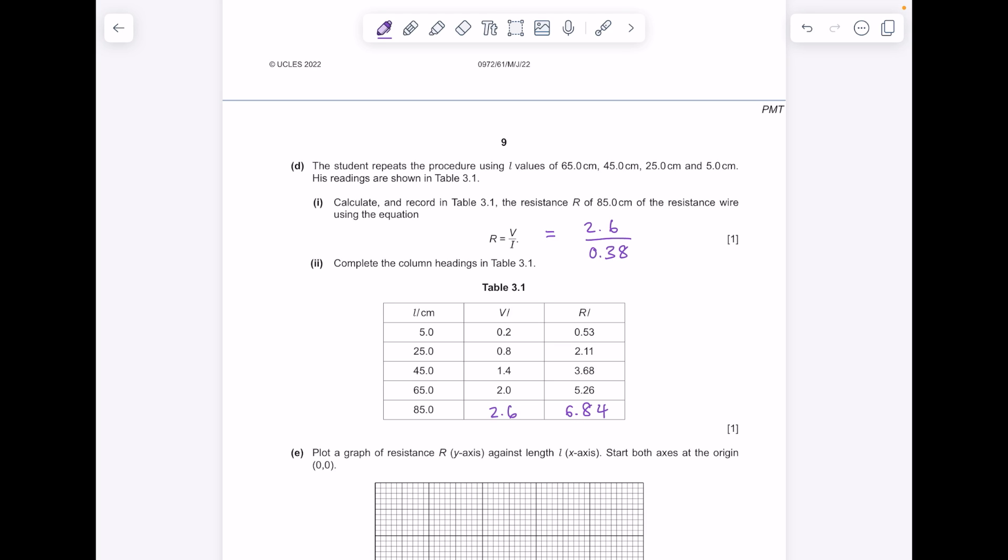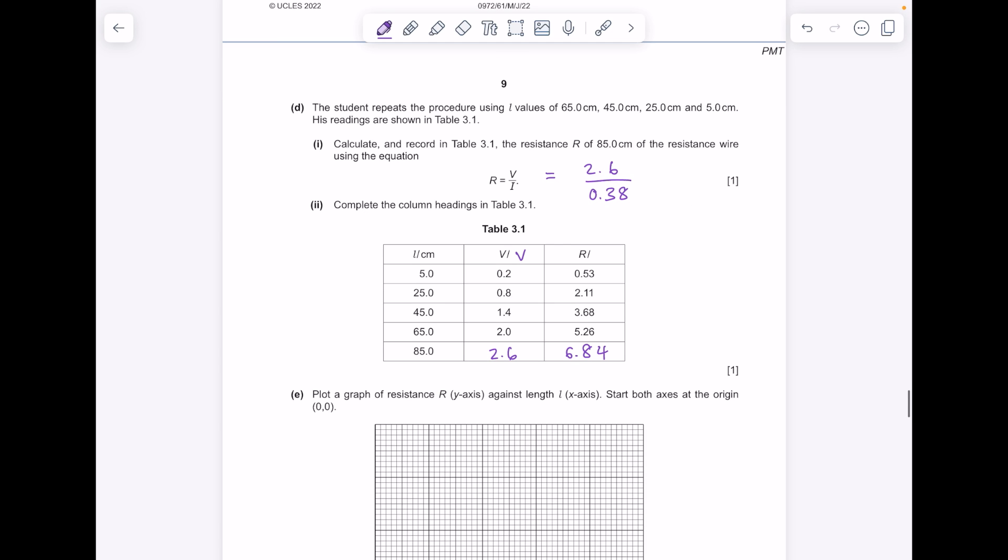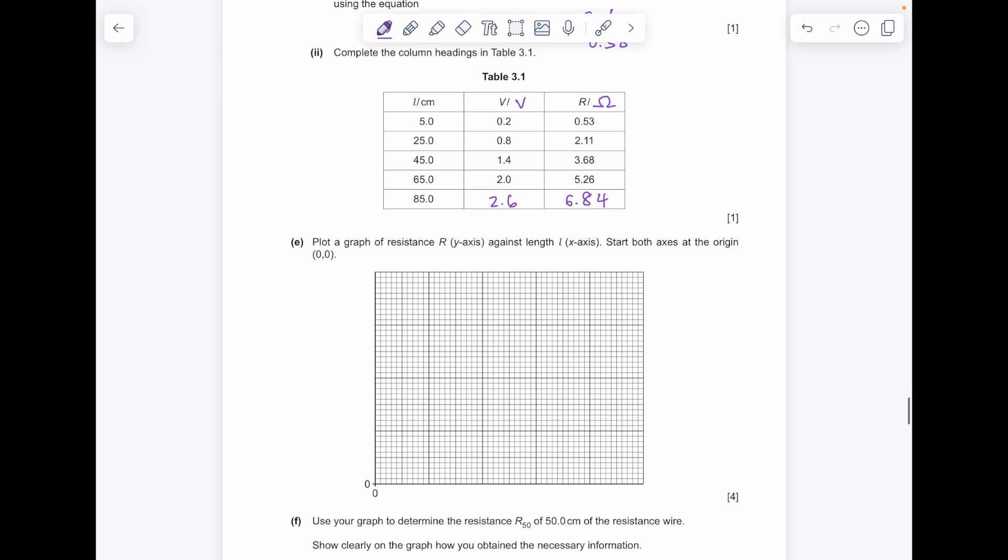Complete the column headings in table 3.1. Potential difference is measured in volts, resistance is measured in ohms. Plot a graph of resistance R on the y-axis, so that's in ohms against length X-axis. Start both axes at the origin, so that's Y, that's X. Pick a sensible scale that occupies most of the graph paper.